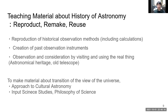To make material about the transition of the view of the universe, there are two difficult points. The first is that we should approach cultural astronomy — not only historical astronomy, but also ethnoastronomy, archaeoastronomy, and so on. The second is that we should incorporate science studies and philosophy of science.